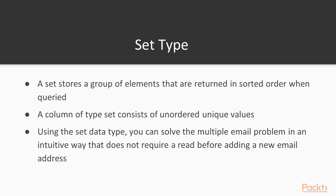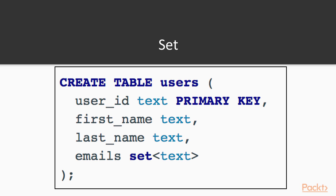A column of type set consists of unordered unique values. Using the set data type, you can solve the multiple email problem in an intuitive way that does not require a read before adding a new email address. We can create a set using the set keyword in Cassandra and giving it a type — for example, an email set of text.